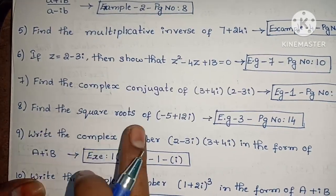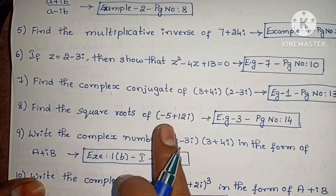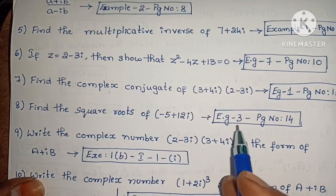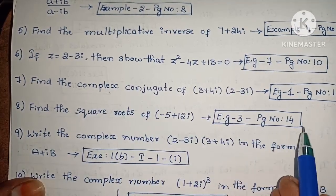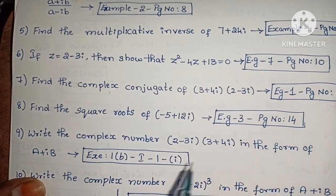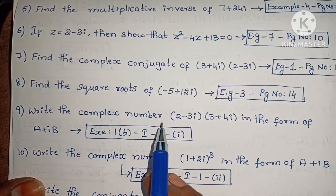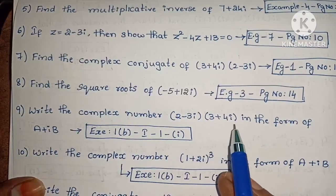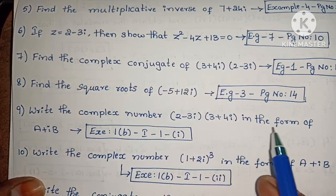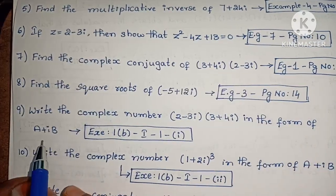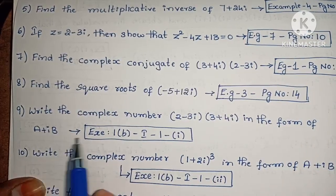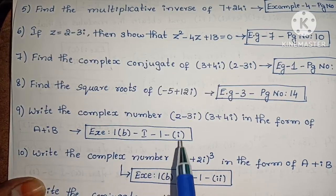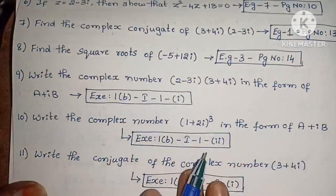Next, find the square roots of minus 5 plus 12i. Example 3, page number 14. Next, write the complex number (2 - 3i)(3 + 4i) in the form of a plus ib. Exercise 1 below, first roman, first one.